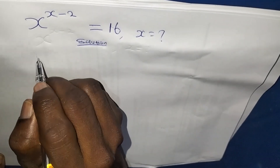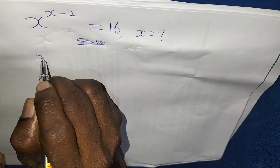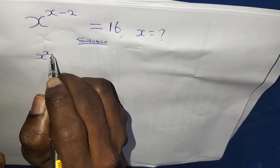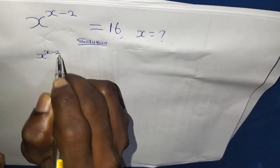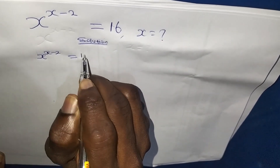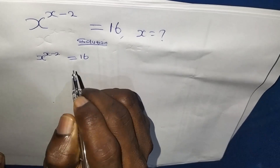So I'll write the question which is x to the power of x minus 2 is equals to 16.